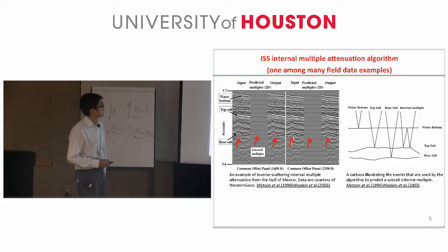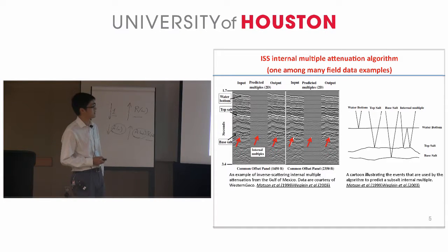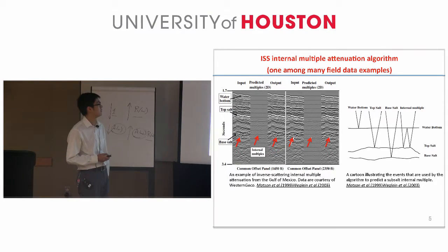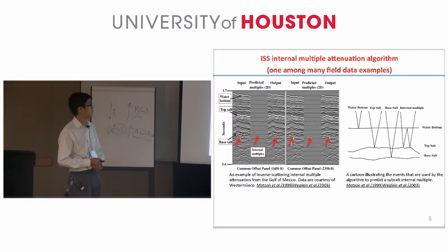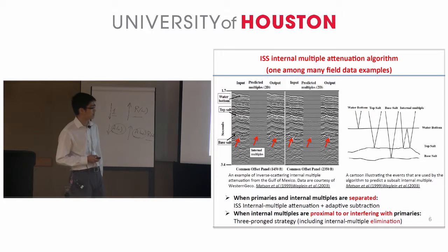Here it shows the first field data example for the ISS internal multiple attenuation algorithm. The data is also from the Mississippi Canyon-Western Chico challenging dataset. The ISS internal multiple attenuation algorithm is the most capable algorithm today used in the industry for internal multiple removal. You can predict all internal multiples with correct time and approximate amplitude and without knowing any subsurface information. And then if primaries and internal multiples are separate, we can use the internal multiple attenuation algorithm and adaptive subtraction to remove the internal multiples.